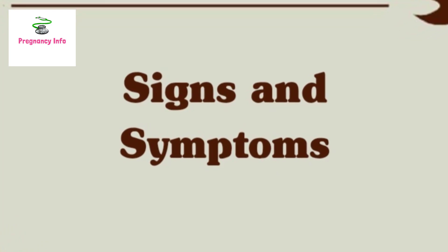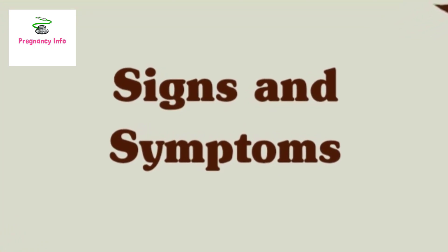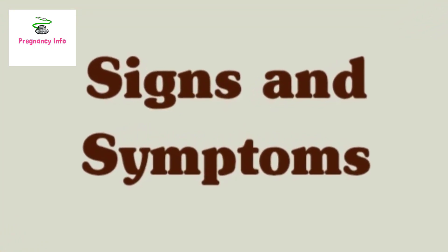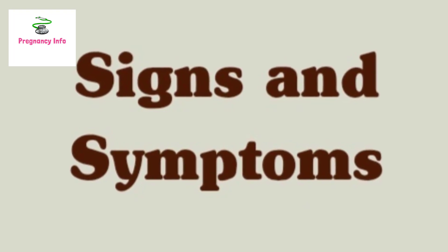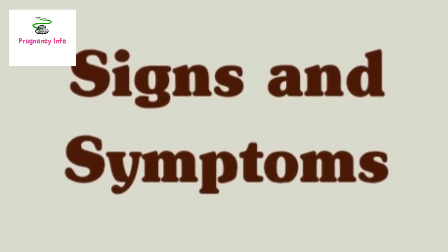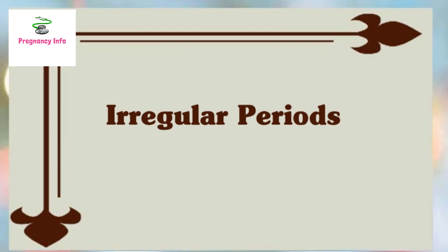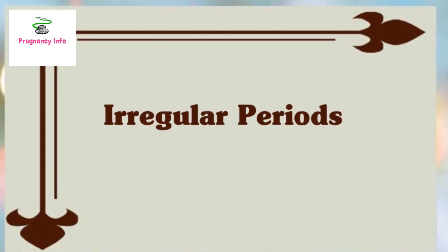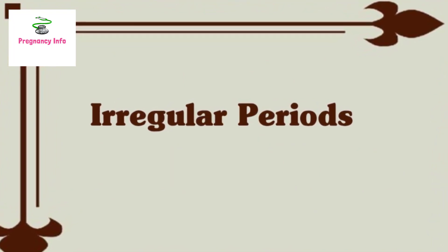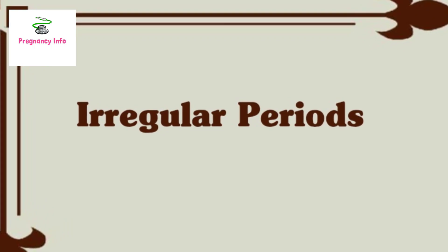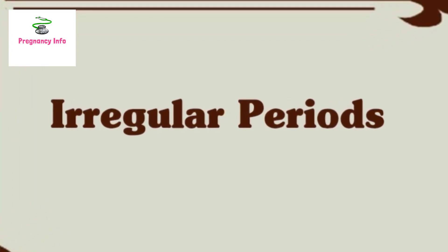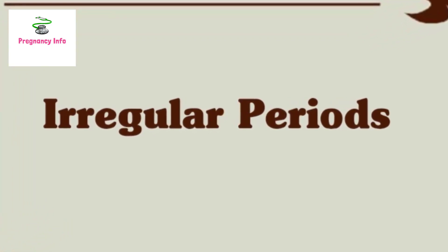Being aware of general signs of ovulation and keeping track of your menstrual cycles can help alert you to signs and symptoms of anovulation. It's important to remember that having a period doesn't necessarily mean you have ovulated. Signs and symptoms of anovulation can include having irregular periods. If the length of time between your periods keeps changing, it's considered an irregular period.